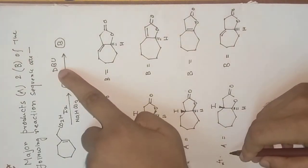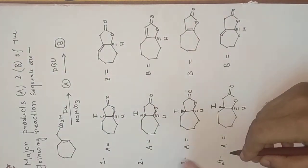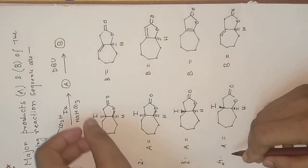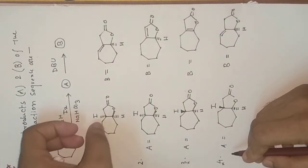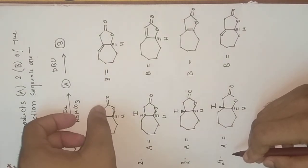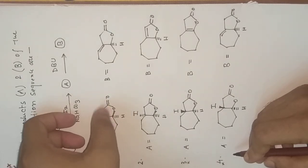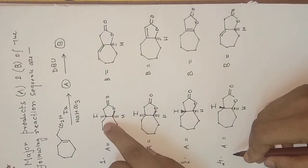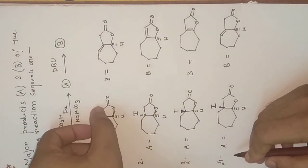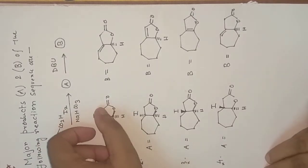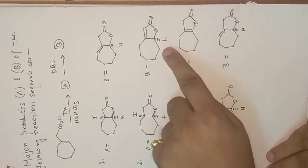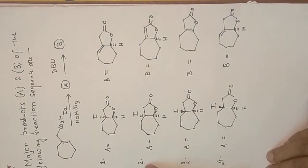Now we use DBU, which is a strong base. Since it is a strong base, there is an elimination reaction. It can abstract the hydrogen at two possible positions. The hydrogen which is near to the carbonyl carbon is the most acidic, so abstraction of that hydrogen occurs, not the other hydrogen. This gives us the product corresponding to only option two, which is correct.